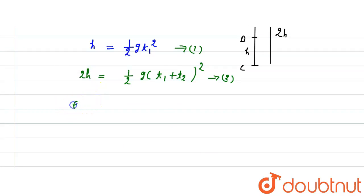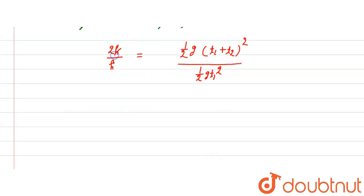Now here equation 2 divide by equation 1. So we can write here 2h upon h is equal to half g (t1 plus t2) square upon half g t1 square. And this h to h cancels, and here this half g and half g cancels.